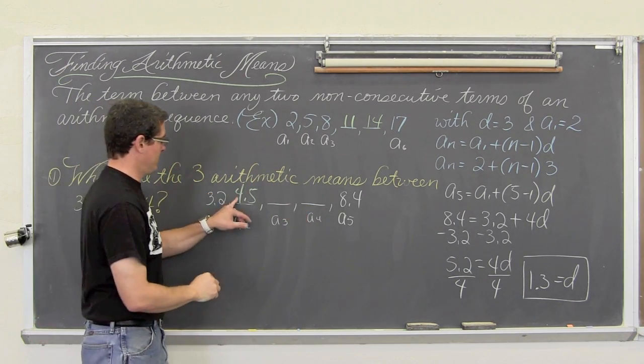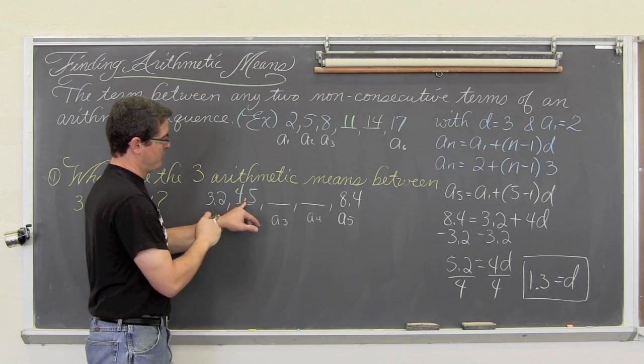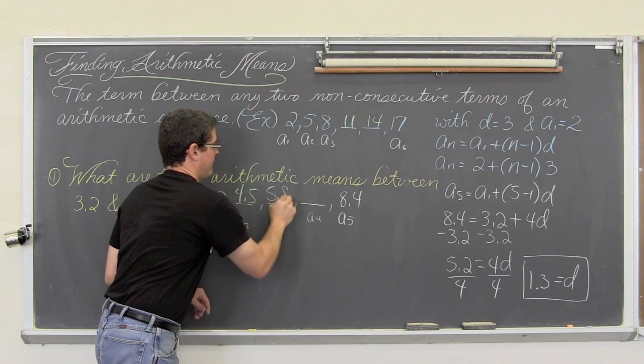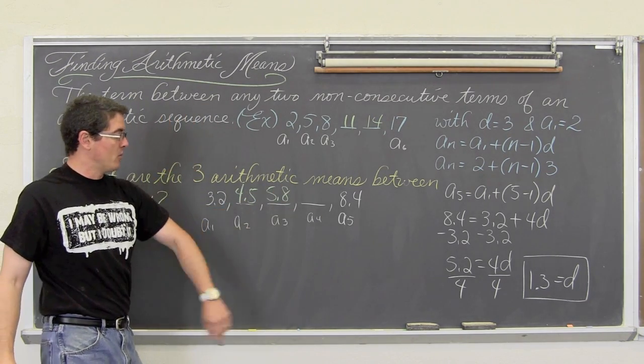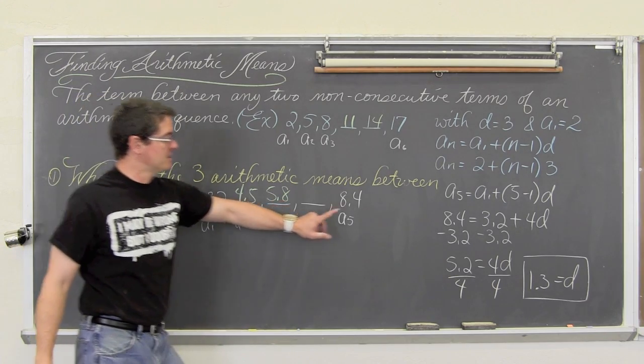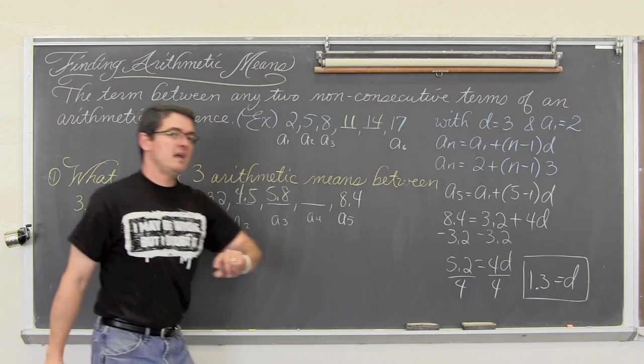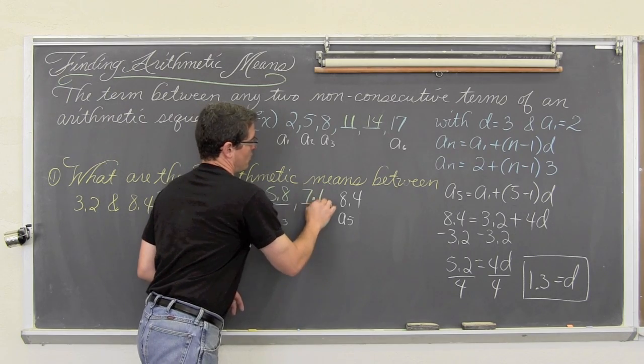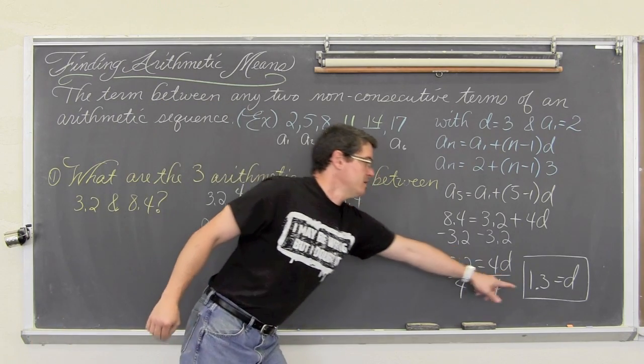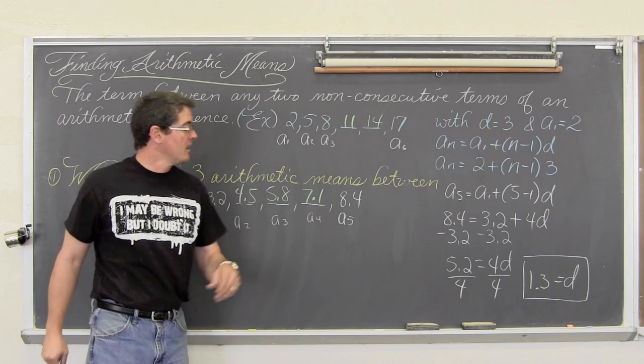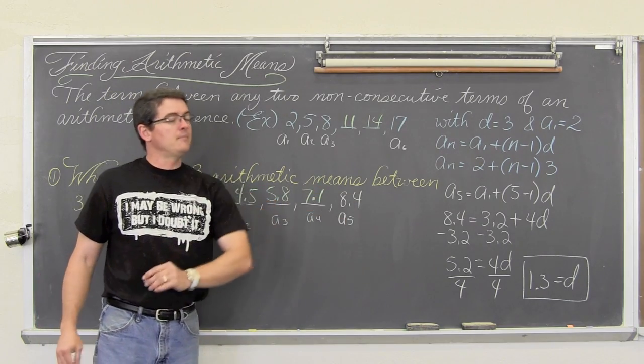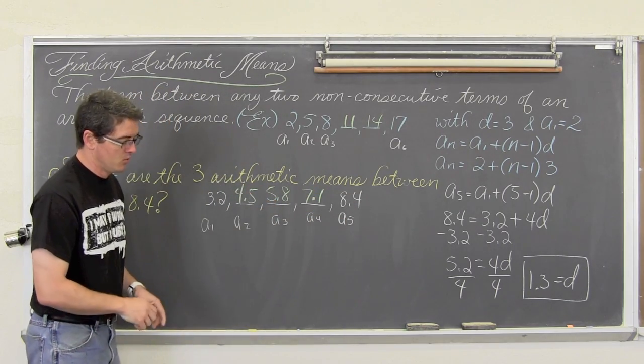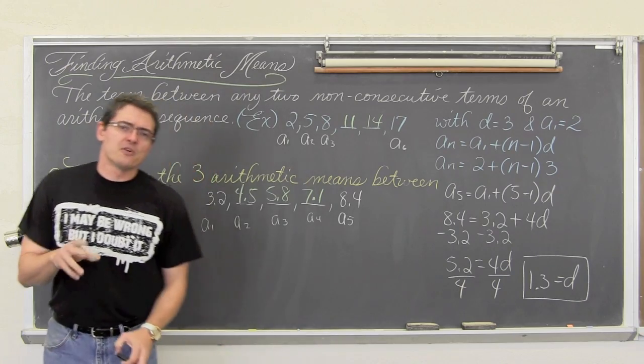Add by 1.3 again, we get 5.8. 5.8 plus 1.3 is 7.1. Add by 1.3 again, just to make sure we have not made any mistakes. 7.1 plus 1.3 is 8.4. That is the first example.